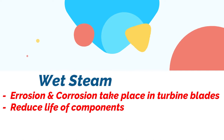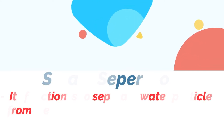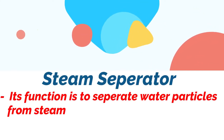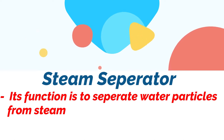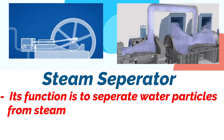Since we use superheated steam, it is usual to separate any water particles that may be present from the steam before it enters the engine or turbine. This is accomplished by the use of a steam separator. The function of a steam separator is to remove the entrained water particles from the steam conveyed to the steam engine or turbine.